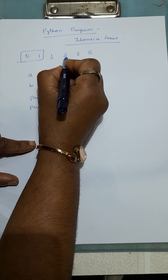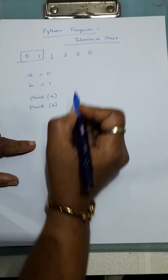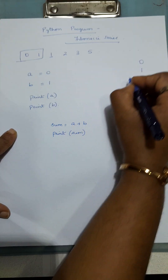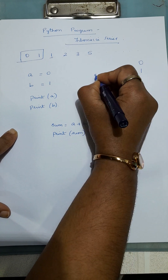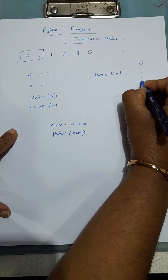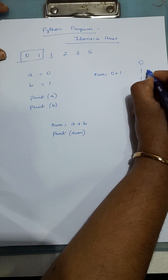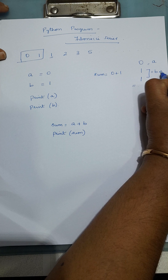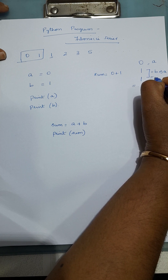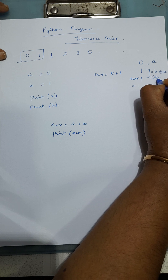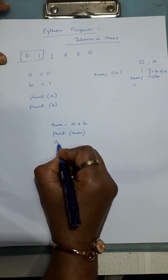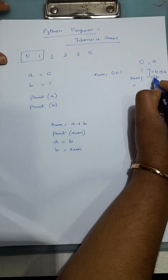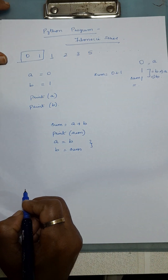After printing, I move on to the next number. The next number will be the sum of the previous two. The previous two are b (which was 1) and sum (which is 1). Now I update: a = b, and b = sum. This is because I need to find sum = a + b again for the next iteration, so I need the current previous two numbers. That's why I write these two instructions.